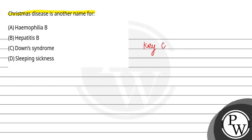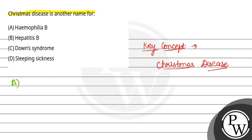So, the key concept is Christmas disease. Option first is Haemophilia B. Haemophilia B is called Christmas disease. This disease is a genetic disorder. The blood does not clot — blood clotting is a problem.